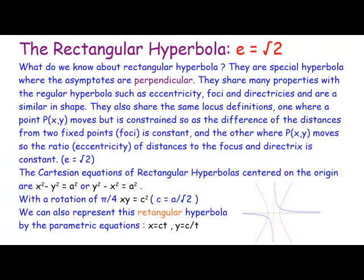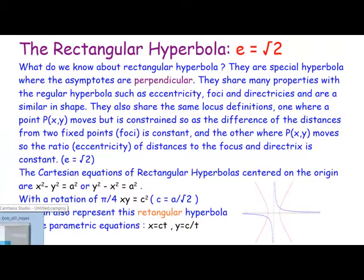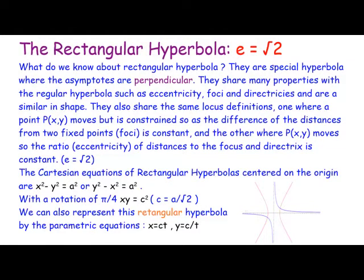So when you actually rotate x squared minus y squared equals 8, and we rotated it, we got xy equals 4.